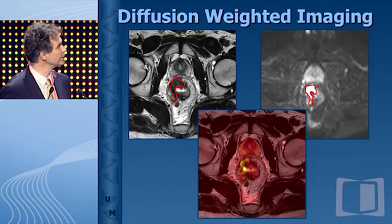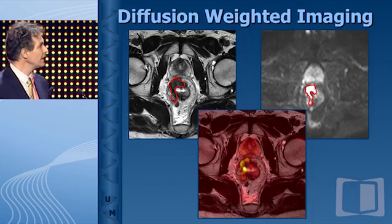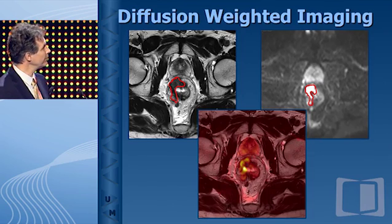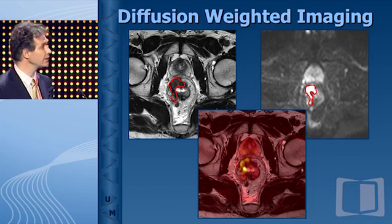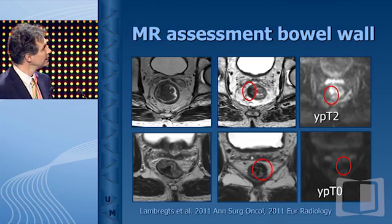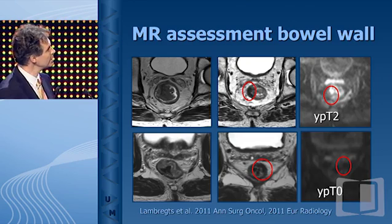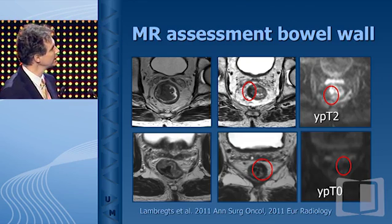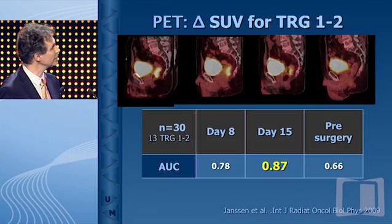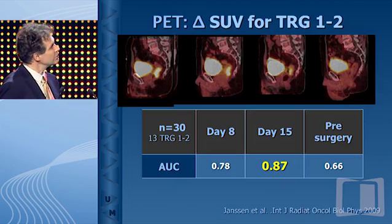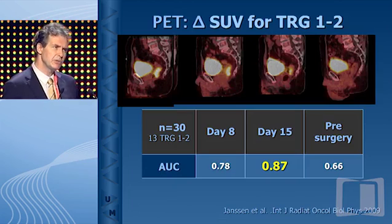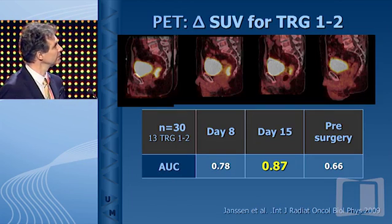This is where diffusion-weighted imaging comes in. We're still working on that — you've heard about it in the previous session. It helps: if you still see a signal in the fibrosis, that means there is tumor there. These two patients look similar on standard MRI, but here there is signal — that's a ypT2 — and here there is no signal. PET scan helps to see whether there is a good response, but it doesn't help confirm complete response, regrettably.